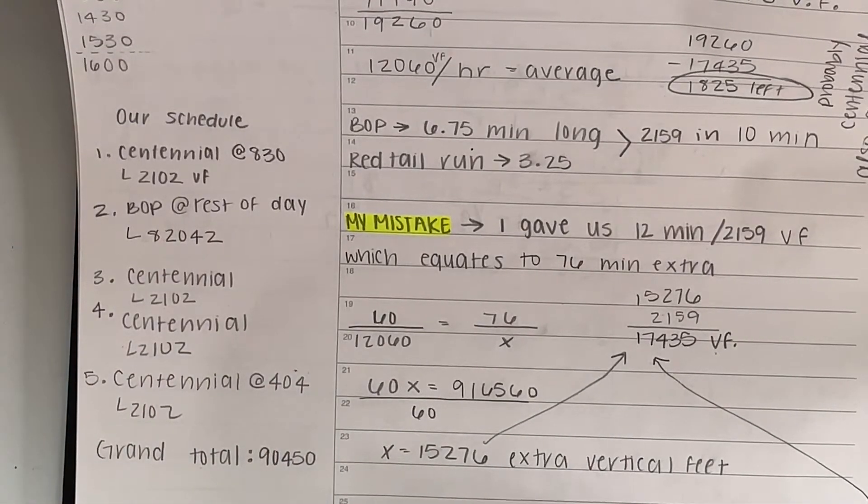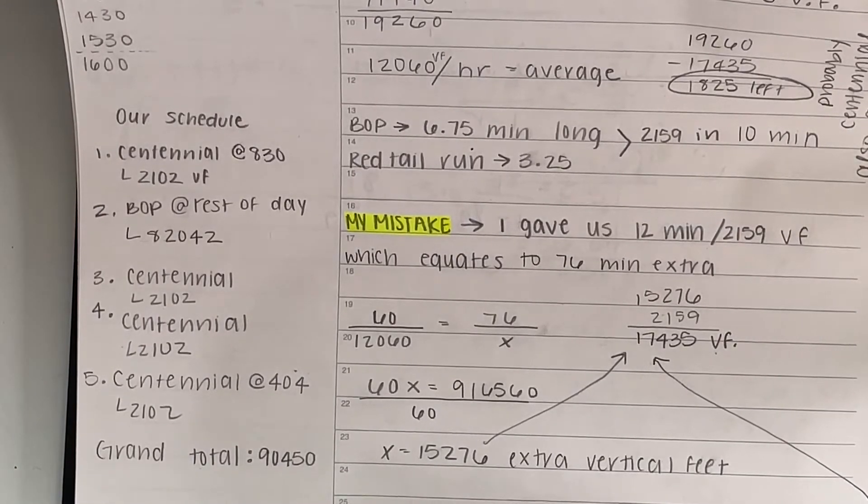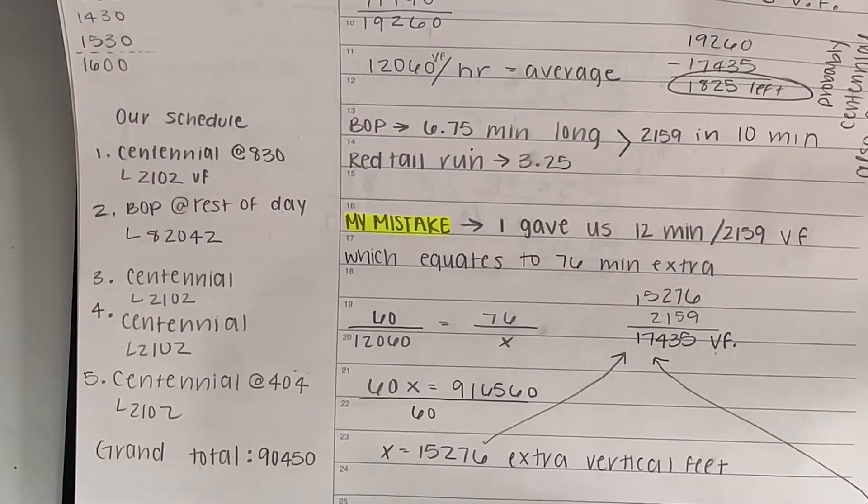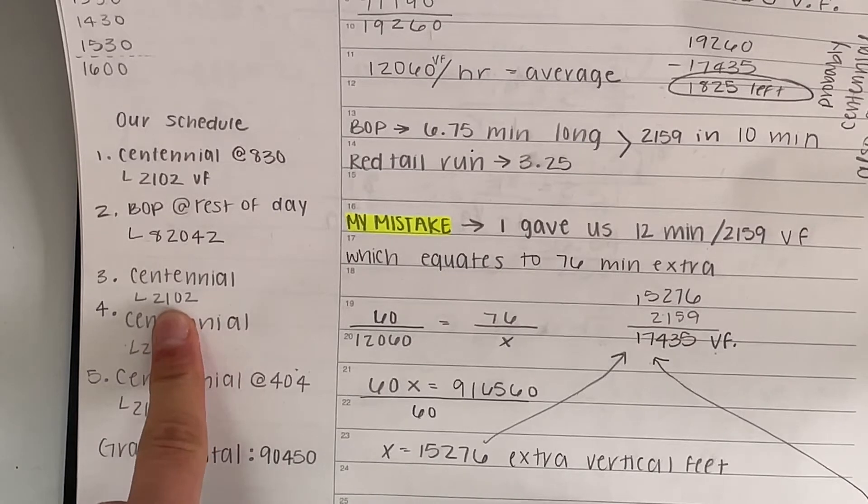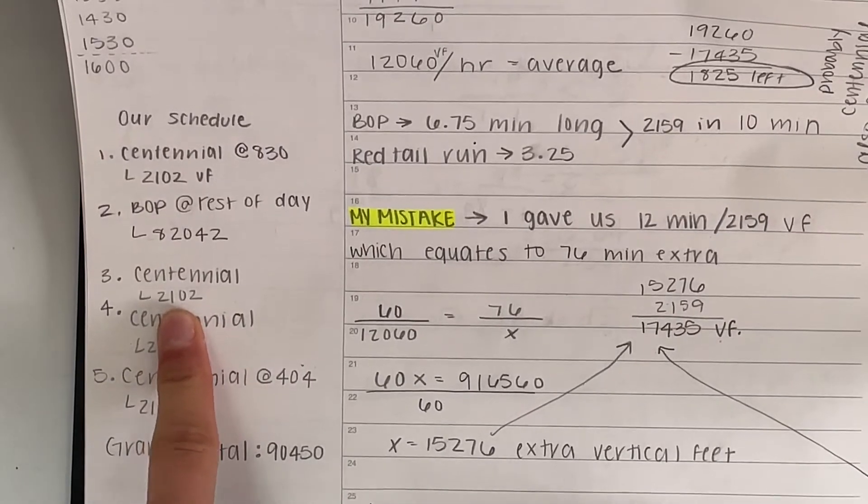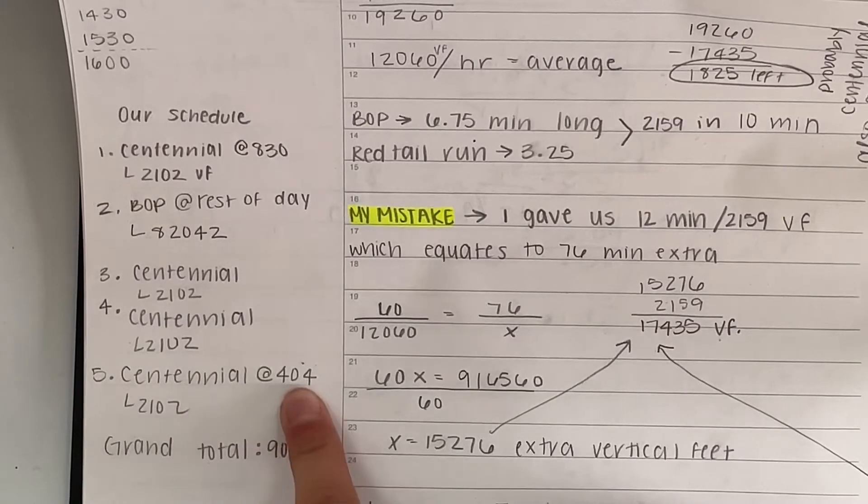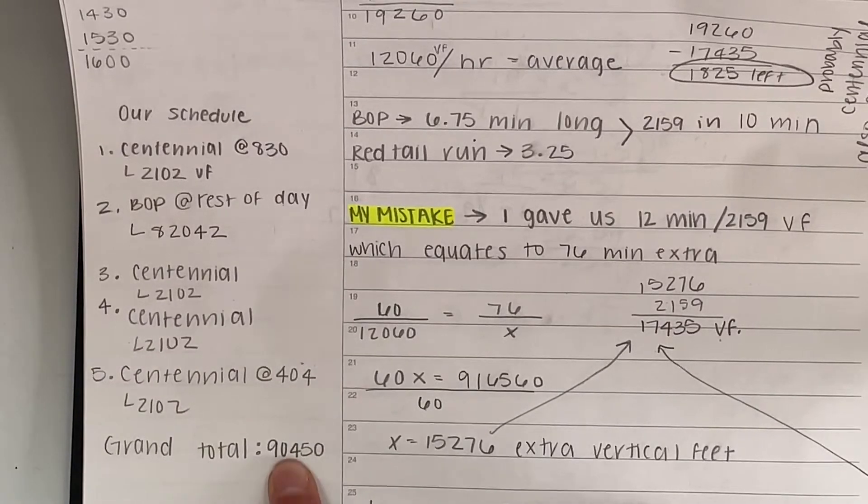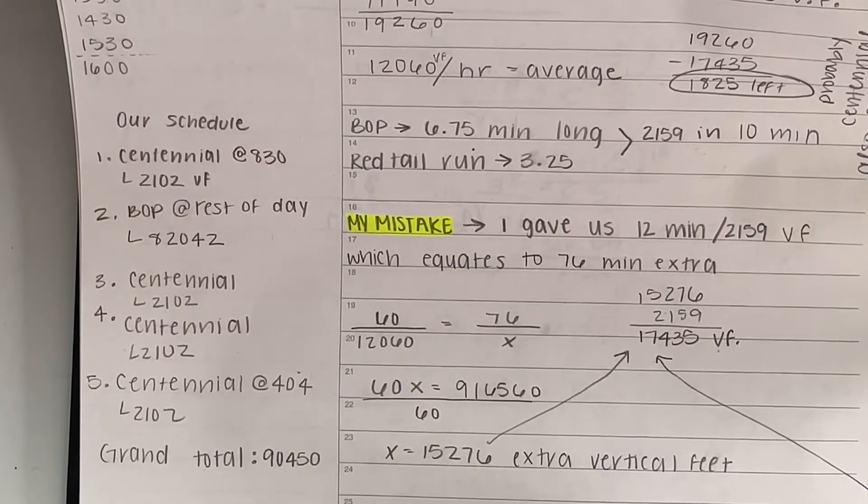In total, we were able to get 2,159 vertical feet per one rotation, which took us 10 minutes. Then at 2:30, when this lift closed, we then went to Centennial, which was 2,102 vertical feet again. And then we did Centennial again. And then we did Centennial finally again at 4:04 p.m. And our grand total, 90,450 vertical feet. So that's the schedule we were able to do.